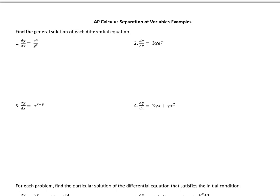The idea here is that we want to separate the variables — put the dy's and y's on one side, and the dx and x's on the other. Starting with this one, we get y squared dy equals e to the x dx by simply cross-multiplying.